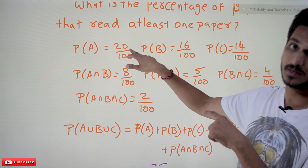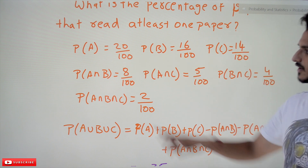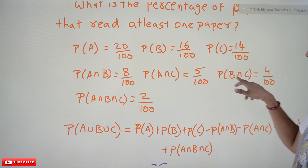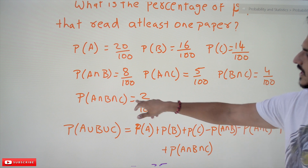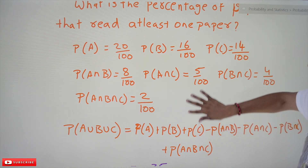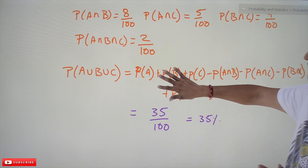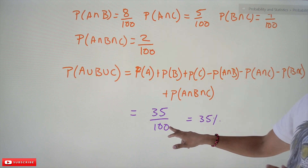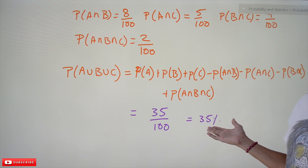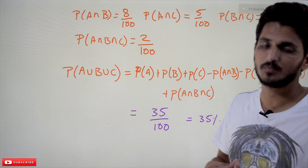Substituting the values: P(A) = 20/100, P(B) = 16/100, P(C) = 14/100, P(A ∩ B) = 8/100, P(A ∩ C) = 5/100, P(B ∩ C) = 4/100, P(A ∩ B ∩ C) = 2/100. Substituting into the equation gives 35/100, which is 35%. So at least one newspaper is read by 35% of the population.